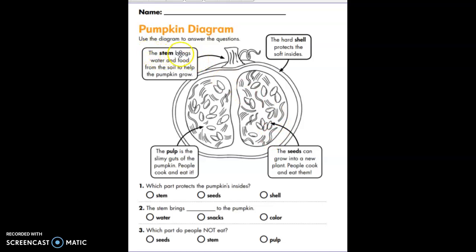The stem brings water and food from the soil to help the pumpkin grow. This is the stem. The hard shell protects the soft insides. It's pointing to this outer hard shell out here.